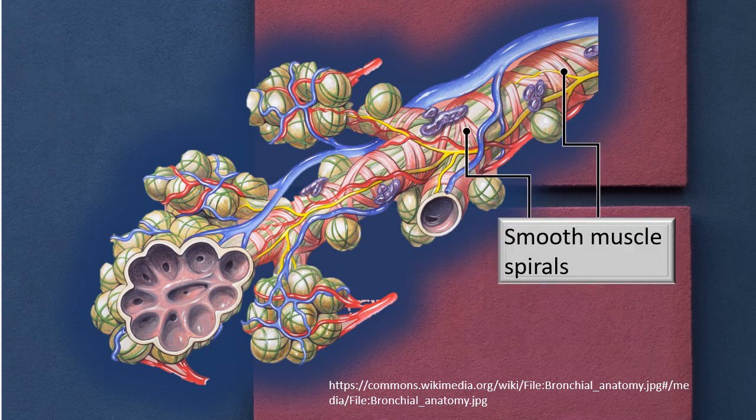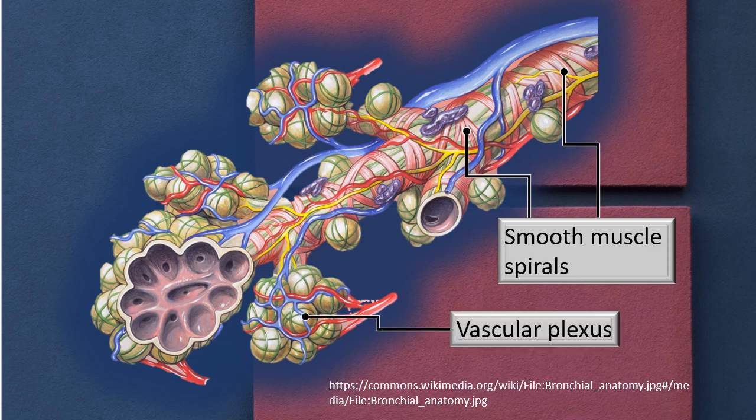You can see the smooth muscle becoming smaller and smaller until finally in the respiratory region there is no smooth muscle whatsoever. However, as I showed you diagrammatically, the spiral arrangement of the smooth muscle is beautifully shown in the bronchial tree. There is also the vascular plexus.